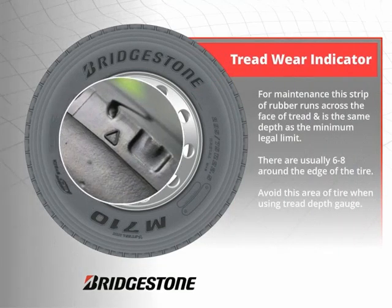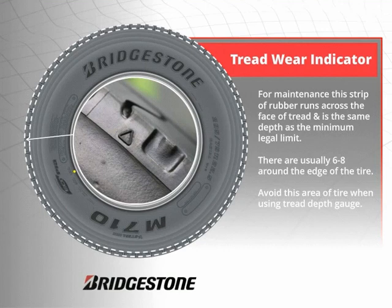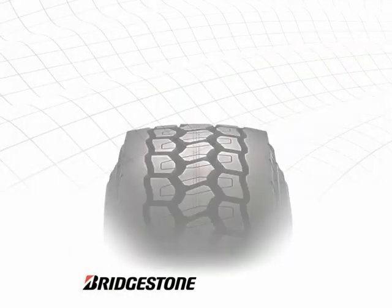This is a tread wear indicator and is for maintenance purposes. A strip of rubber runs across the face of the tread that is the same depth as the minimum legal limit. There are usually six to eight tread depth indicators around the edge of the tire. When using your tread depth gauge, avoid this area of the tire.